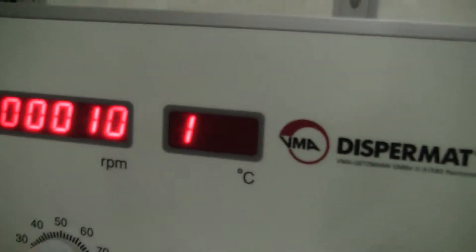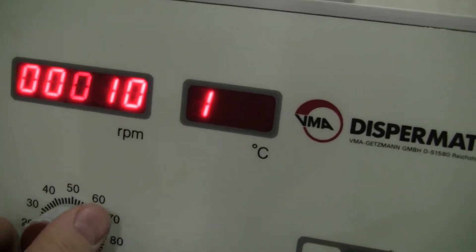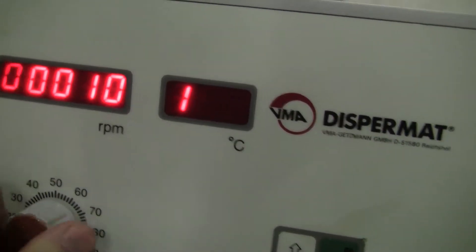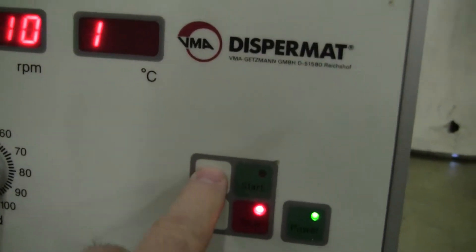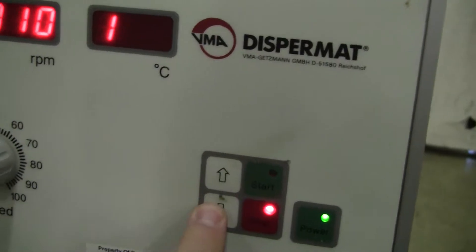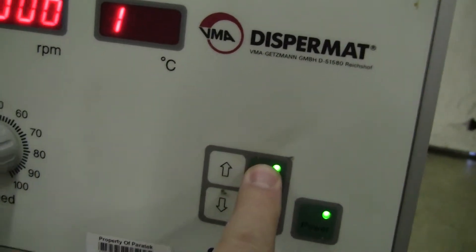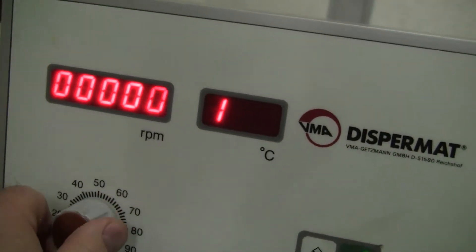It takes it off the safety and puts it on the RPMs. Then you can set your RPMs. Firstly, oops, wrong switch. Then you set your RPM. There you go.